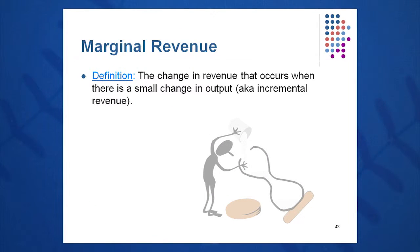You might hear the term marginal revenue — the change in sales that occurs when there's a small change in output. Again, marginal typically means one more unit, whether it be revenue or sales.